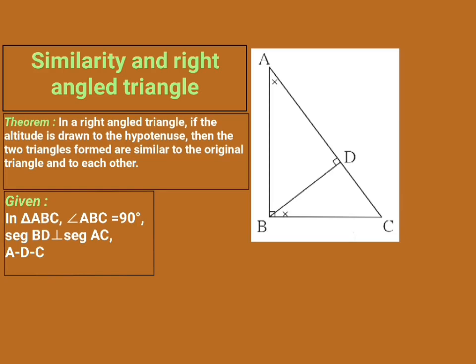The next step is to write To Prove. For that we go through the statement again — the part of the statement which comes after 'then' is called To Prove. It means we have to prove that the two triangles formed are similar to the original triangle and similar to each other.